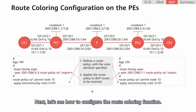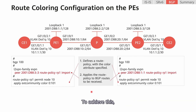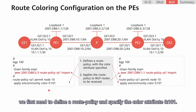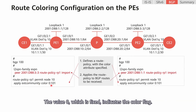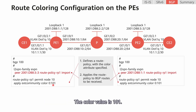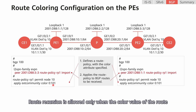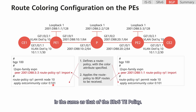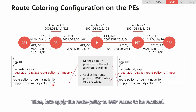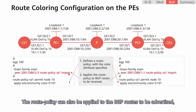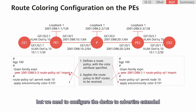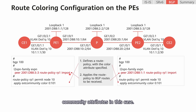Next, let's see how to configure the route coloring function. To achieve this, we first need to define a route policy and specify the color attribute 0:101. The value 0, which is fixed, indicates the color flag, and the color value is 101. Route recursion is allowed only when the color value of the route is the same as that of the SRV6TE policy. Then, let's apply the route policy to BGP routes to be received. The route policy can also be applied to the BGP routes to be advertised, but we need to configure the device to advertise extended community attributes in this case.